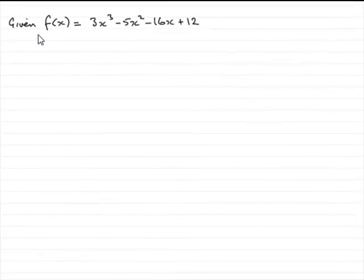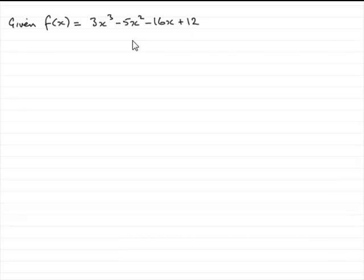In this part of the question, we're given that f of x equals 3x cubed minus 5x squared minus 16x plus 12, and asked to find the remainder when this is divided by x minus 2.